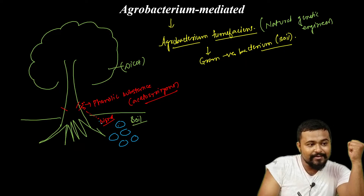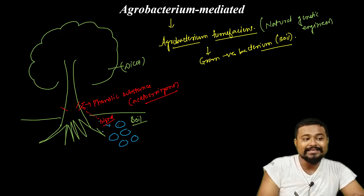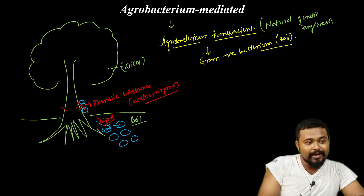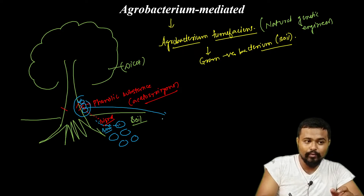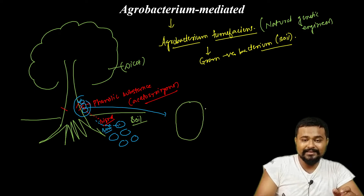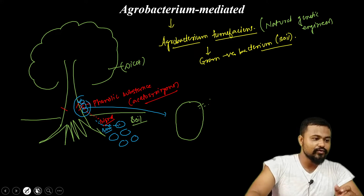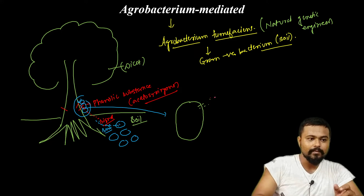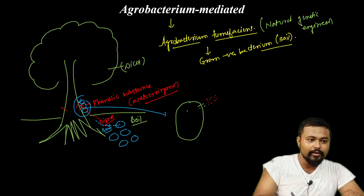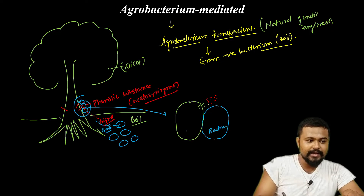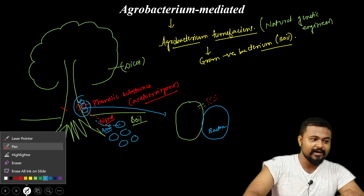This bacterium is attracted when the phenolic substance is released from the plant cell. The bacteria is released and comes to the plant cell. This is the plant cell, and it releases the phenolic substance which signals the bacteria.